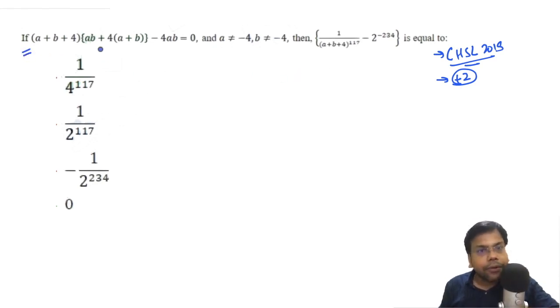Okay, we have one condition and we have a not equal to minus 4, b not equal to minus 4, and we need to find the value of 1 upon a plus b plus 4 raised to power 117 minus 2 this. Anyway, since we know we have something not minus 4, something not minus 4, it means they must be not equal to 0.